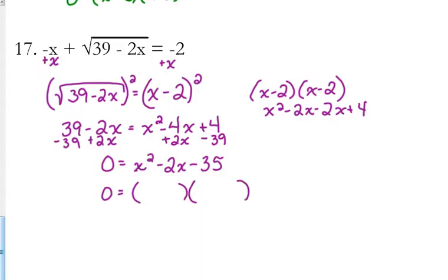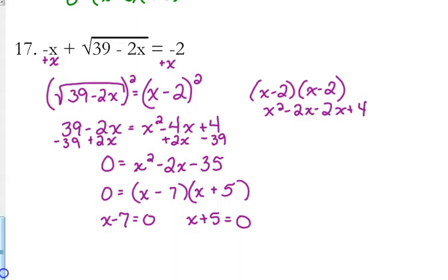Now we factor the quadratic. We've got x times x. What factors of 35 add to give us negative 2? That's 7 and 5, with the 7 being negative: negative 7 plus 5 is negative 2. So our answers are x equals 7 and x equals negative 5.